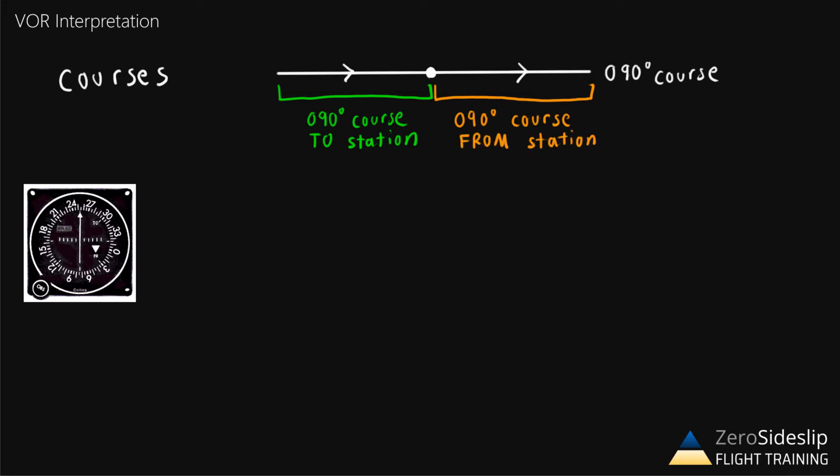The way to understand this is if you were to picture an airplane that were traveling along in the 090 or due east direction, if it were on the west side, the airplane would be going to the VOR station. But if we're on the east side and were traveling in a 090 direction, it would be traveling from the station. So that's where the terminology is coming from.